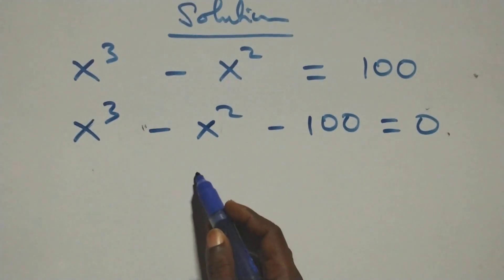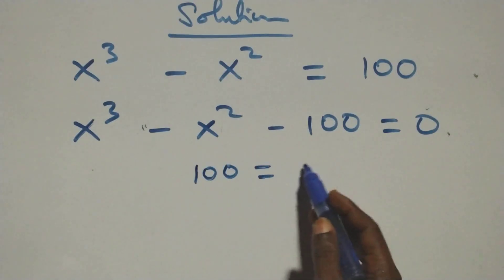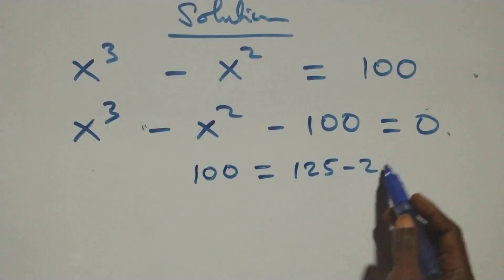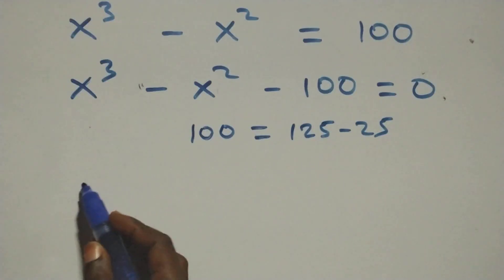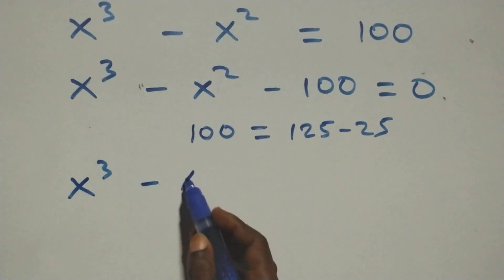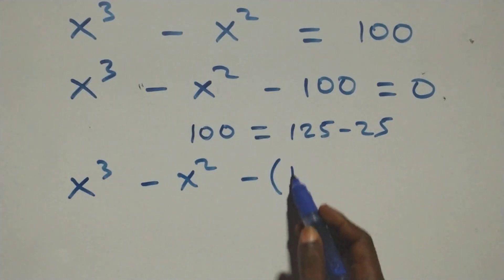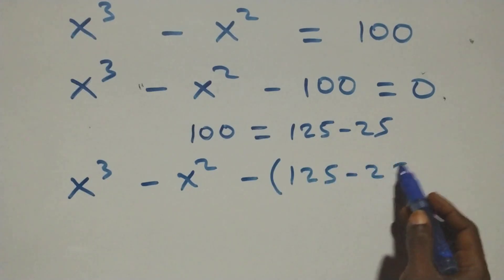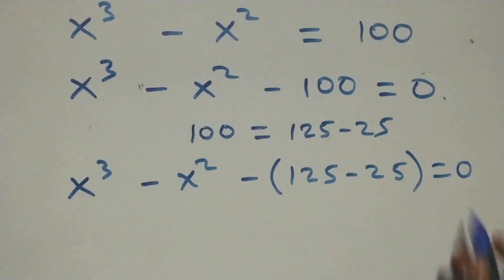That is, here we can write undrained as 125 minus 25. So this equation becomes x raised to power 3 minus x squared, then minus bracket 125 minus 25, then equals to 0 here.